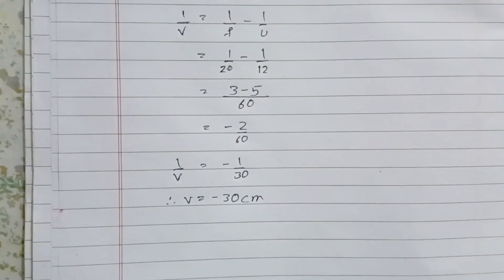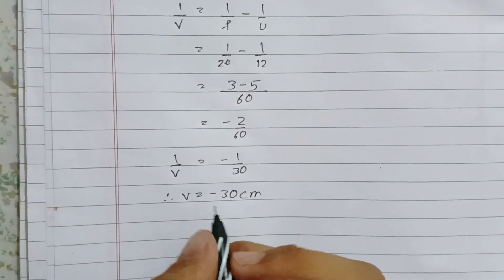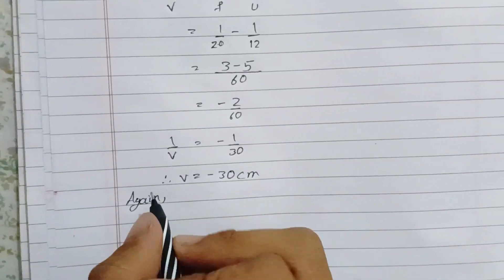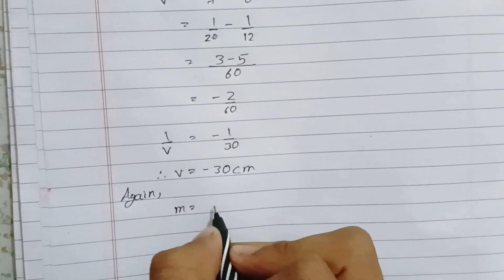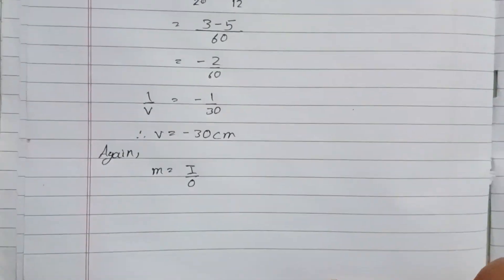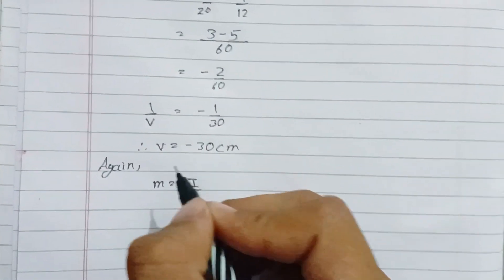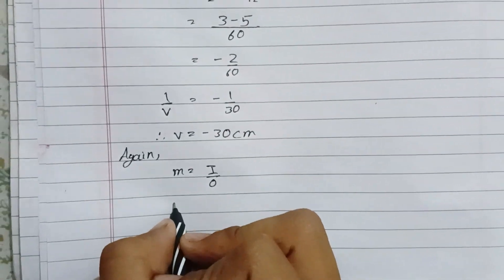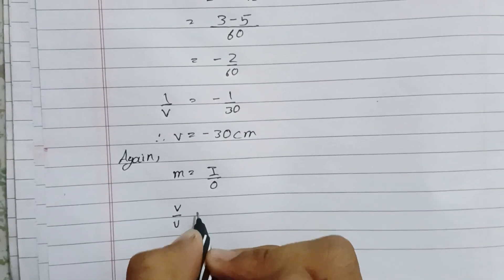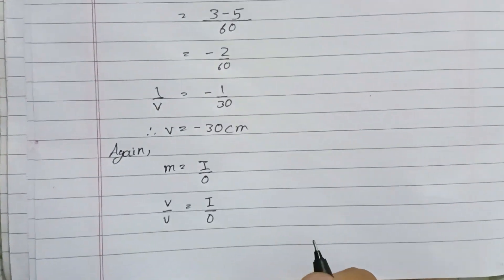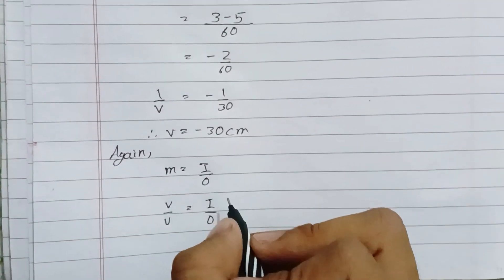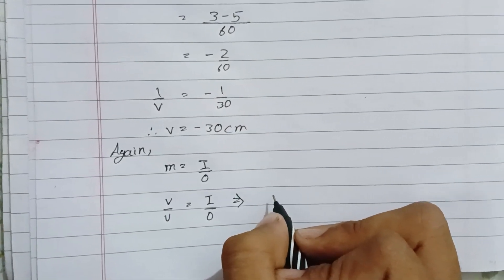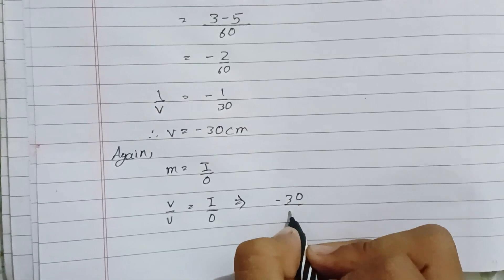For image size, magnification m equals I over O equals v over u. Substituting values: I over 4 equals -30 over 12.